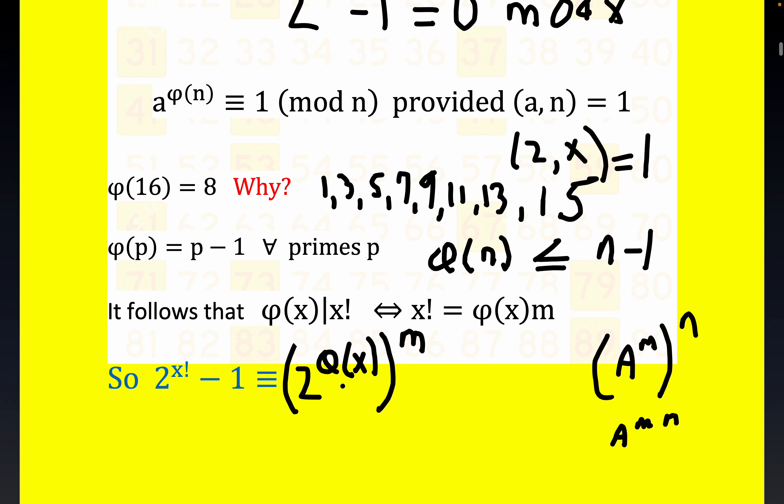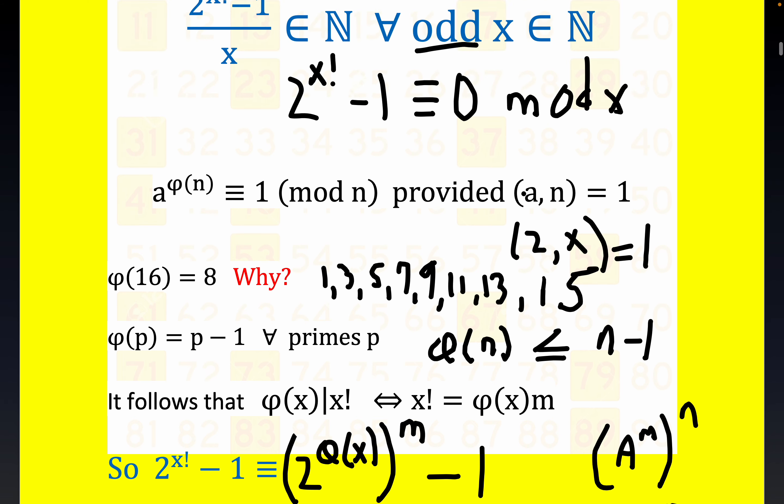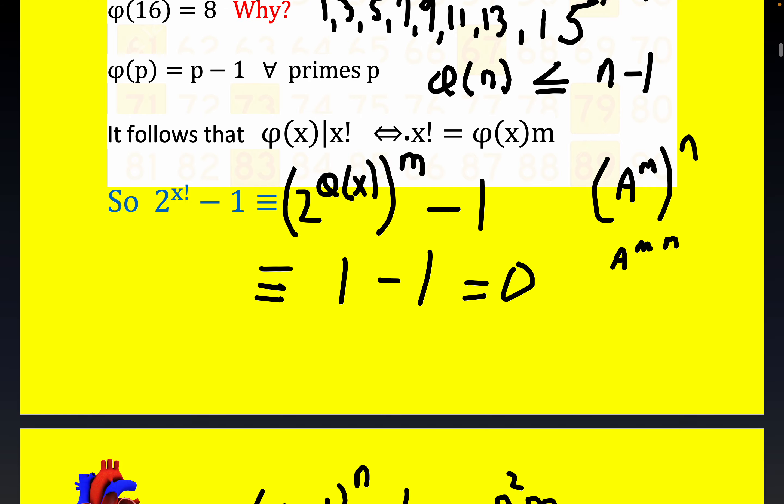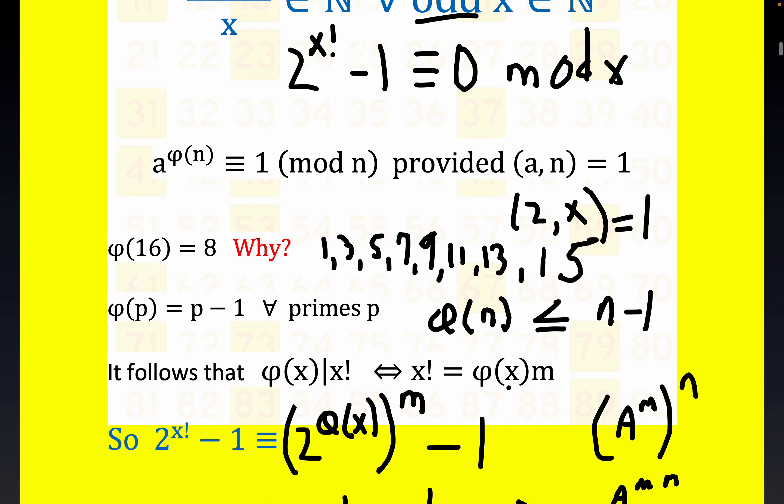But notice that this part is just congruent to 1. So let me just go ahead and finish here. This is minus 1. So we get congruent to 1 minus 1, which is, of course, equal to 0. And that concludes the proof. Because remember, I decided we would do it this way. This statement right here can be rewritten equivalently to this. So we've just shown that 2 to the x factorial minus 1 is congruent to 0. And that completes the problem.